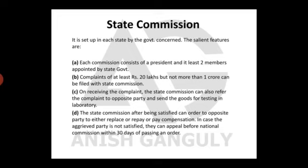On receiving the complaint, the same process takes place. The State Commission can also refer the complaint to the opposite party and send goods for testing in the laboratory. Once satisfied, they can order the opposite party to replace, repay, or pay compensation. If the aggrieved party is not satisfied, they can appeal before the National Commission within 30 days of passing of an order.